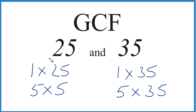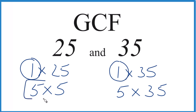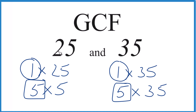Let's see what we have in common. One goes into both 25 and 35 evenly. And then we have five — five is the largest number that goes into both 25 and 35. So five, that's the GCF. When we find the greatest common factor for 25 and 35, we get five.